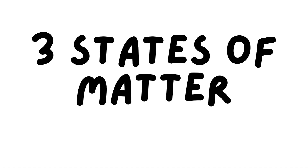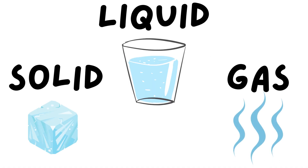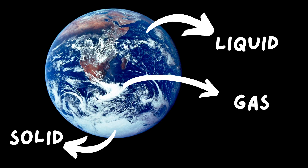There are three states of matter. Matter can take a solid form, a liquid form, or a gas form. And water is very special because it's the only thing on Earth that naturally occurs in all three states.